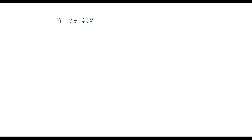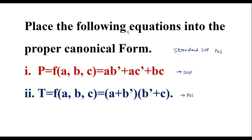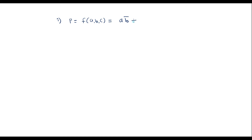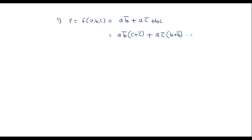Let me take the first function. P consists of three variables A, B, C, and the given function is AB̄ + AC̄ + BC. Standard SOP means each product term should consist of all the literals. In AB̄, the first product term, C is missing. We will add the missing variable as AB̄ multiplied by (C + C̄), because we know that C + C̄ equals 1 by Boolean laws. In AC̄, the missing term is B, represented as (B + B̄). In BC, the missing term is A, represented as (A + Ā).